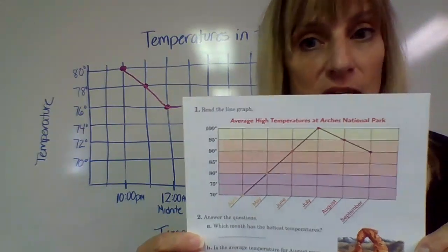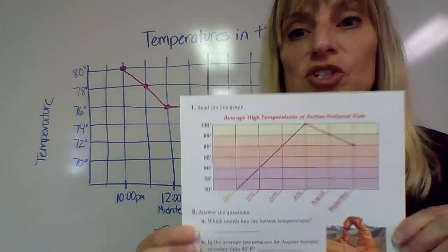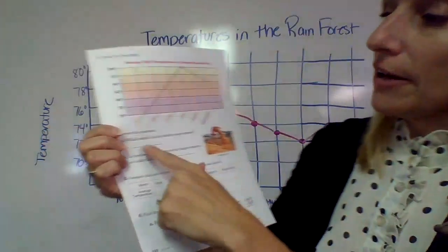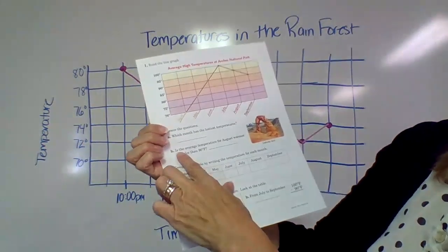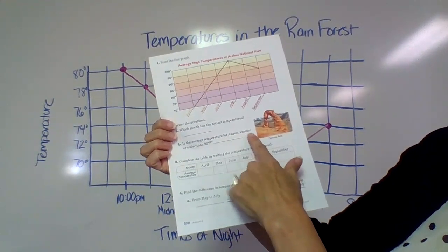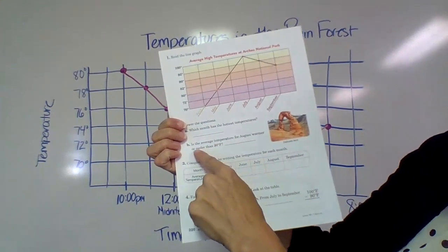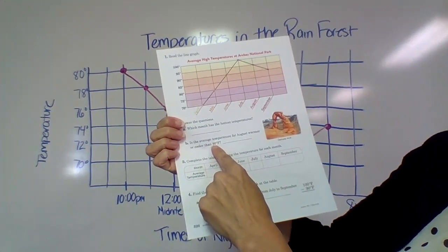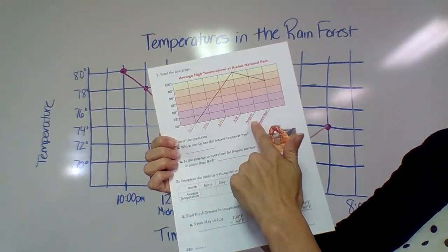So it says which month, so you would write the month of July. You wouldn't write 100 degrees. That's not what it's asking. It's asking which month, so you are July. B is the average temperature for August warmer or cooler than 90?